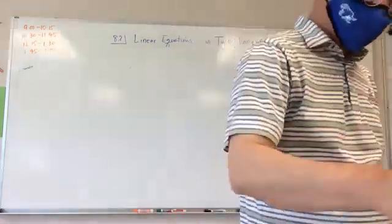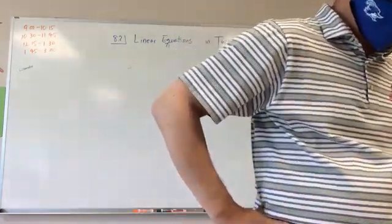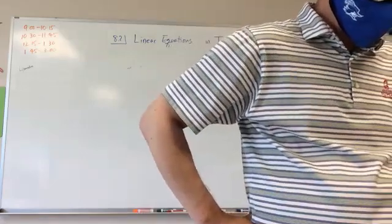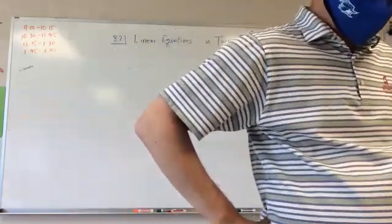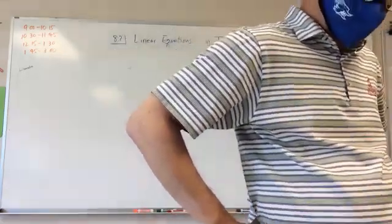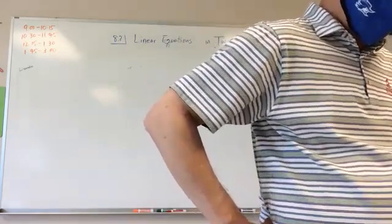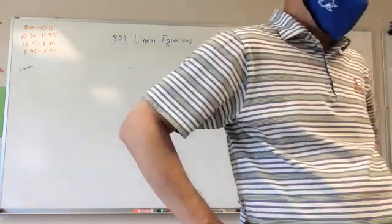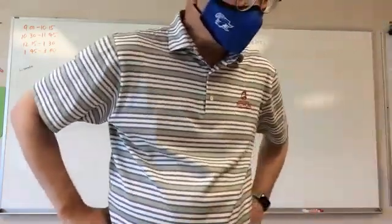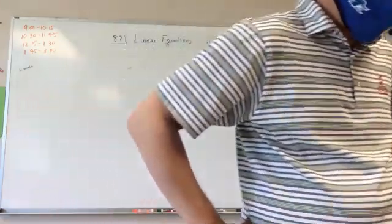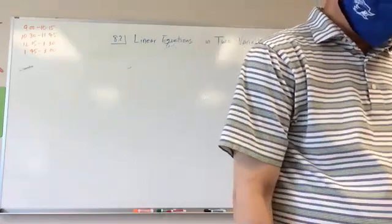Equations as functions: the vertical line test shows that y equals two x minus one and y equals three are functions, while x equals negative two is not a function. Any function whose graph is a non-vertical line is called a linear function. The equation of a linear function is solved for y — that is called function form. It may help to write the equation in function form before graphing.